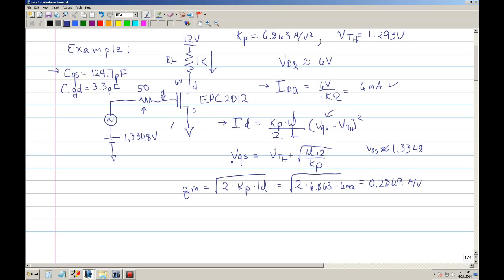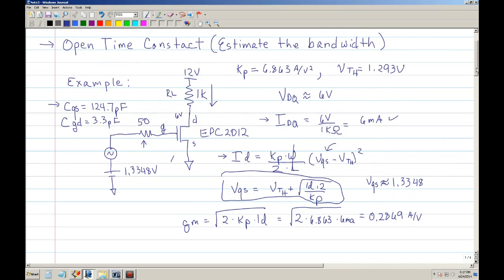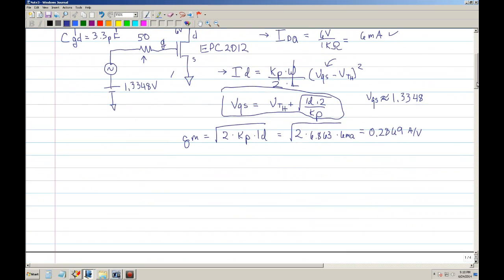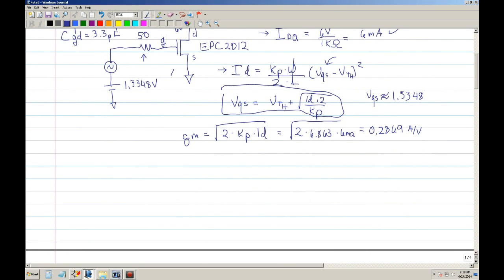That would be my quiescent current at the drain. To calculate or actually set this current, we would use your MOSFET equation, and you would calculate the VGS that would give you the 6 milliamps of current and therefore give you your 6 volts at the drain. When you solve for VGS, you get this equation. The Kp of the EPC 2012 is 6.863 amps per volt squared, and the threshold voltage is 1.293 volts. When you do the calculations, you need 1.3348 volts to give you the proper quiescent current. I went ahead and calculated Gm because that's another parameter you will need to estimate the bandwidth. In this case, that parameter is 0.2869 amps per volt.